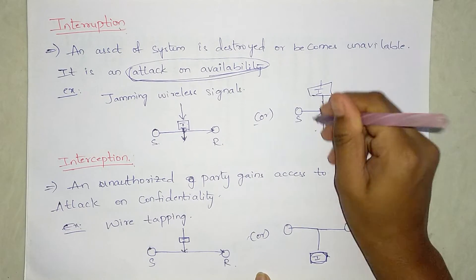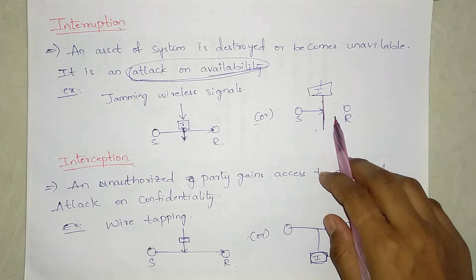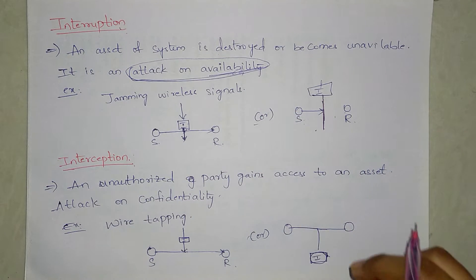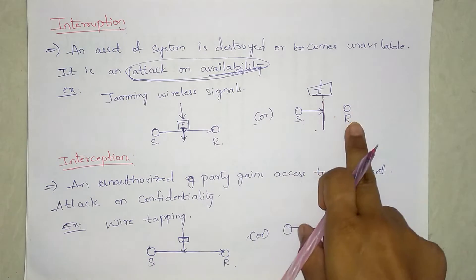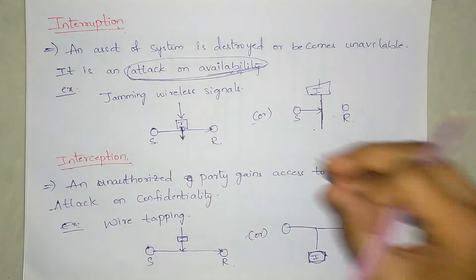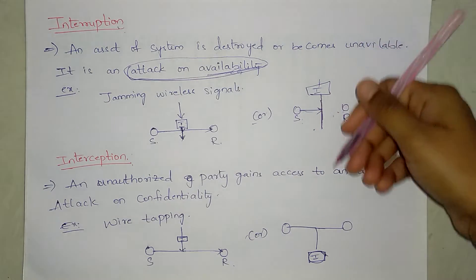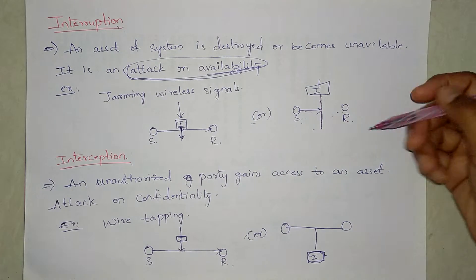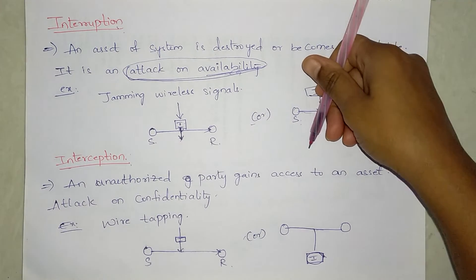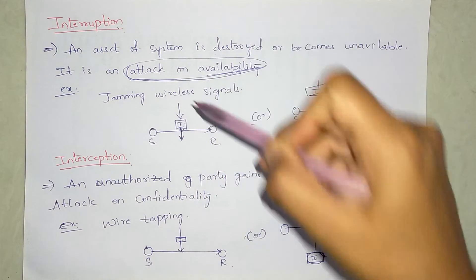Interruption means the hacker checks for any conversations happening between the sender and receiver. They will send some random requests to the network, and if they find any conversation, it will be interrupted by the hacker. This is called an attack on availability.